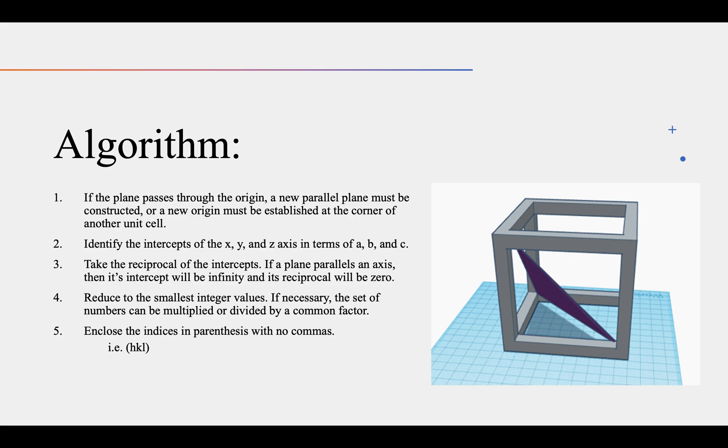The second step is to identify the intercepts of the x, y, and z axis in terms of a, b, and c. The third step is to take the reciprocal of the intercepts, and if a plane is parallel to an axis, the intercept will be infinity, and its reciprocal would then be zero.